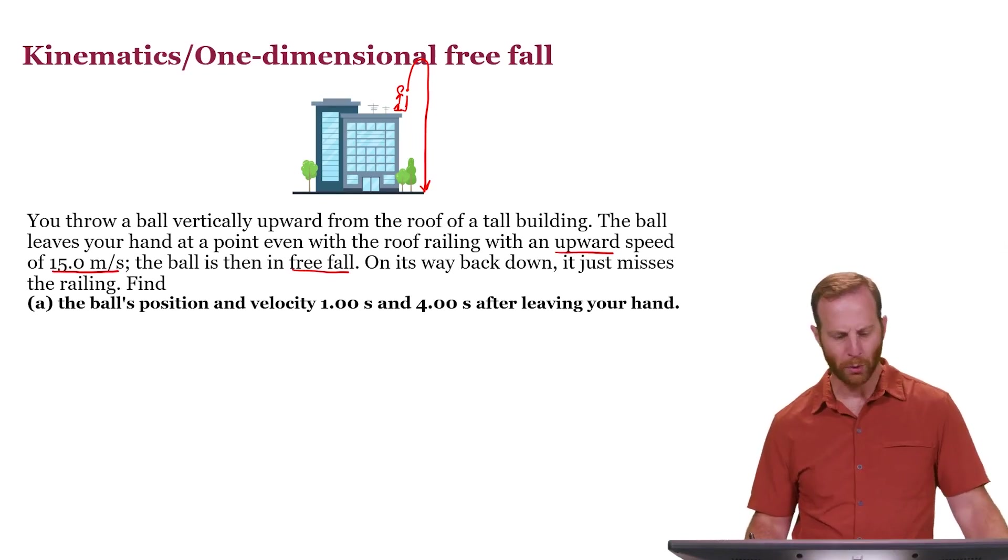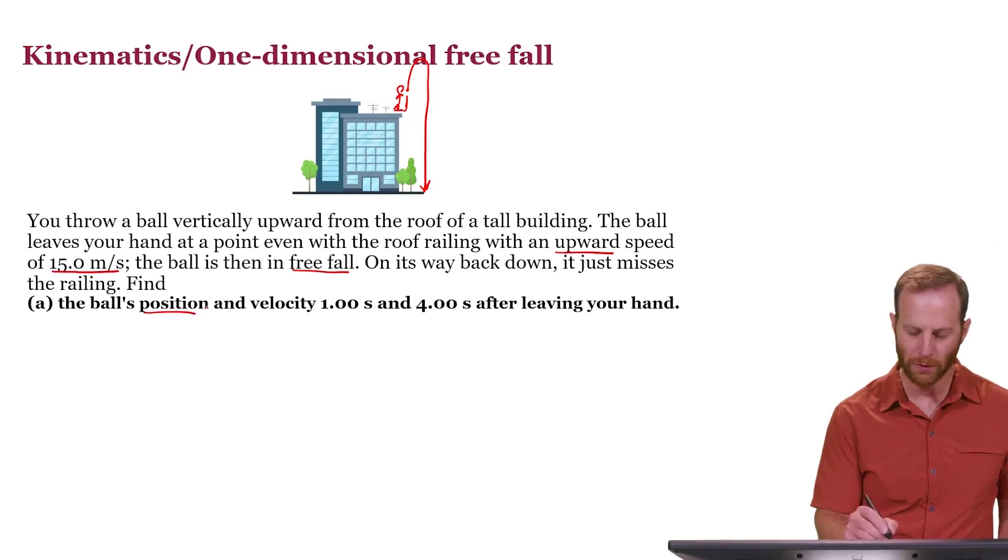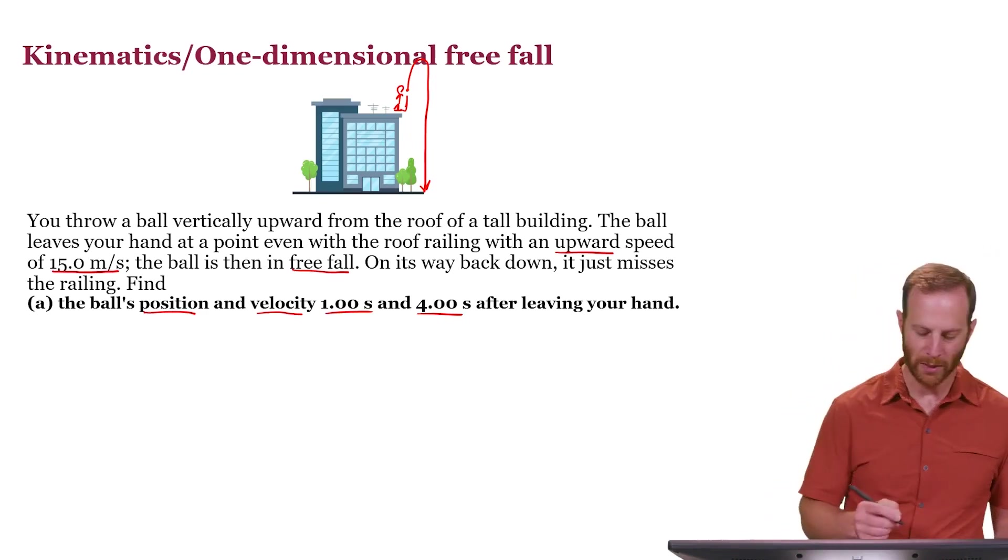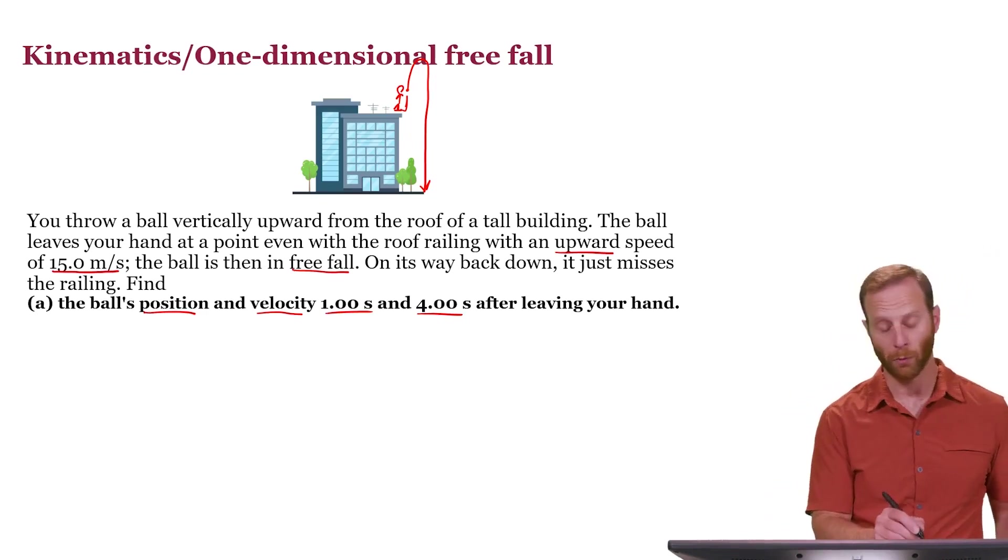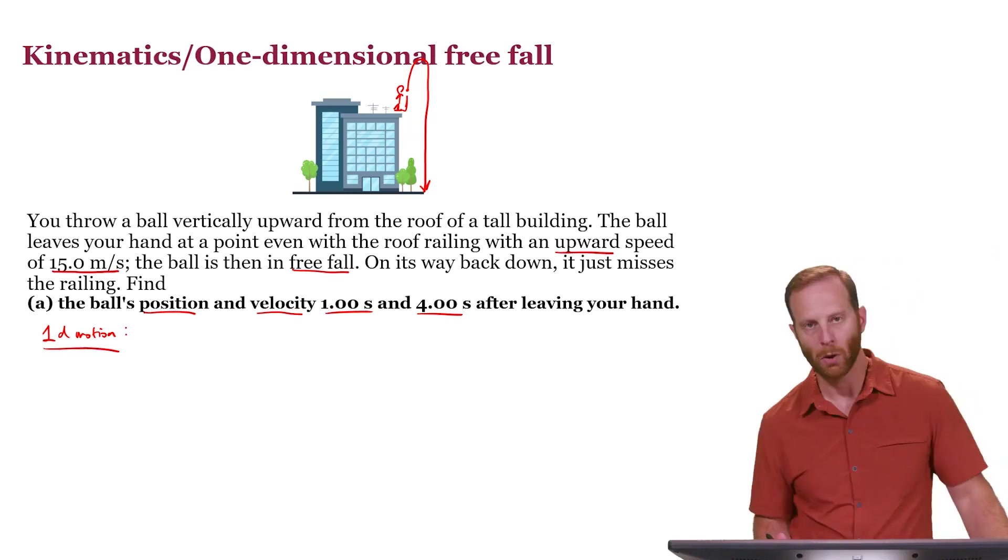So what we're trying to do in this part is to figure out what is known. We know the 15 meters per second. What we're looking for is the position and the velocity at some later times. And so we should think about what concepts are here. The concept here is kinematics or the mathematics of one dimensional motion in particular. So the concept of 1D motion is what we have in mind and there are some equations that go along with that.